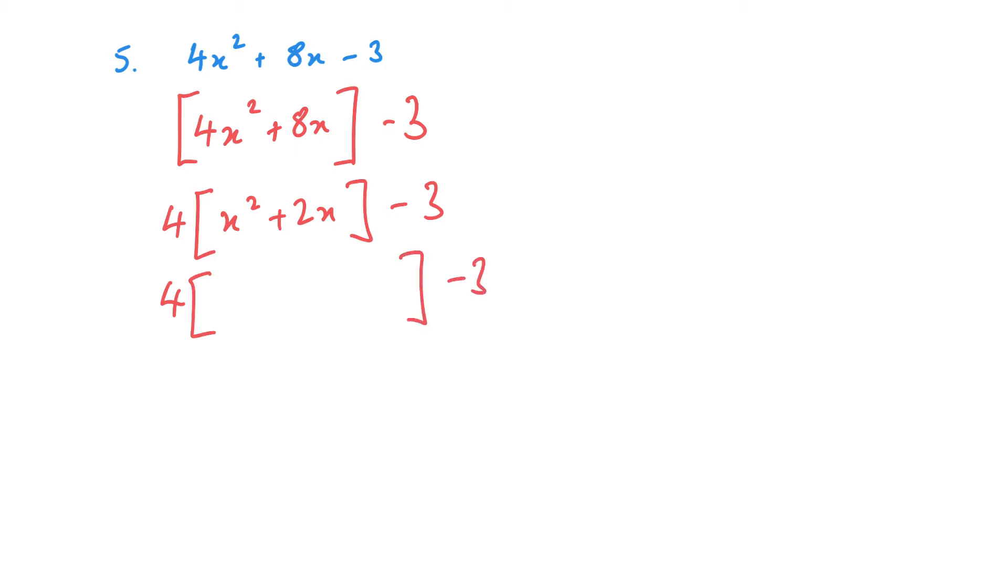So we've got x plus 1 squared minus 1 squared is 1, so I'm putting that in. Then finally I just need to expand my bracket, so 4 times x plus 1 squared minus 4 minus 3, and that is my completing the square complete.